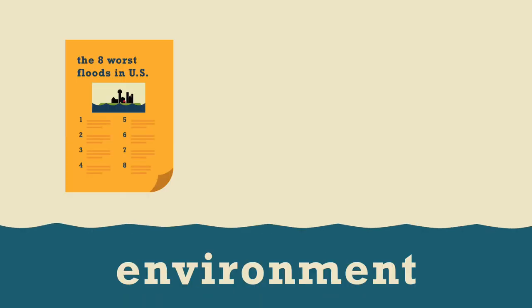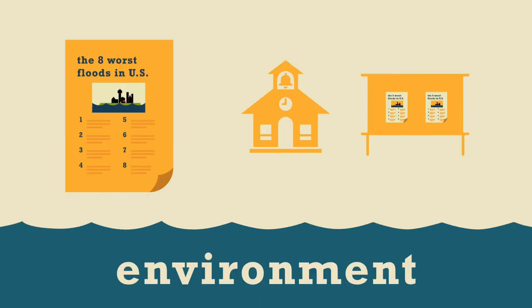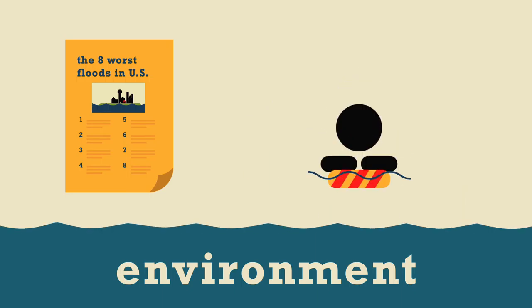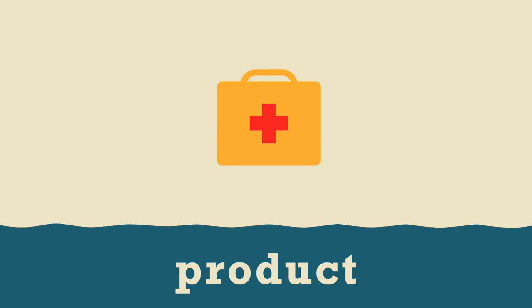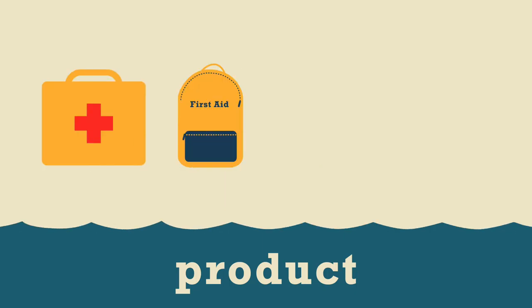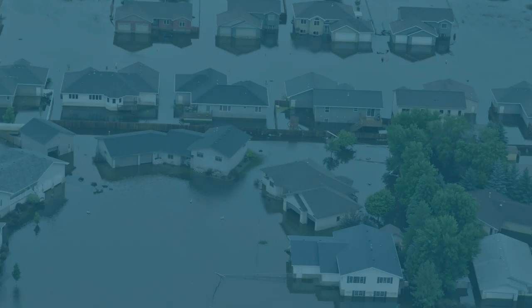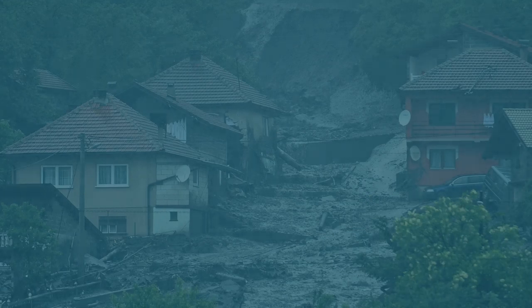Environment: creating environmental graphics in schools for youngsters to understand the serious consequences of floods so they can know how to save themselves. Product: an emergency kit bag containing items people may need in a flood to maximize survival rate. Anywhere it rains, it can flood — just because you haven't experienced a flood in the past doesn't mean you won't in the future. It is too late to be prepared when flooding is happening.